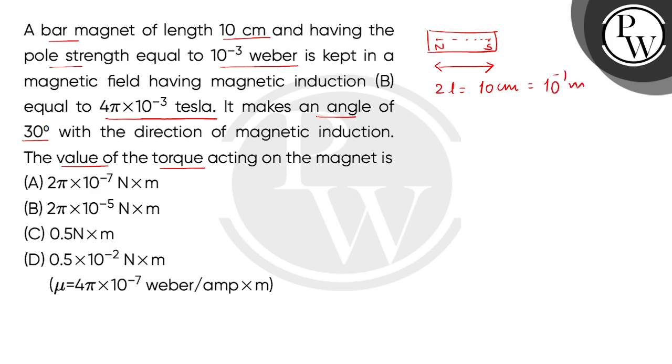Now children, we have the pole strength given. We call the north pole pole strength positive M and the south pole negative M. So children, the value of M is given as 10 to the power minus 3 Weber, which is the SI unit.